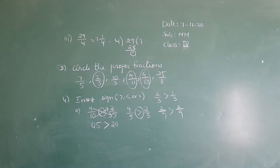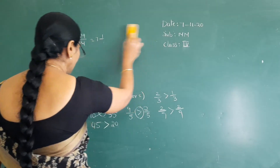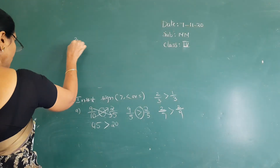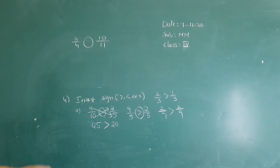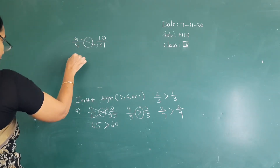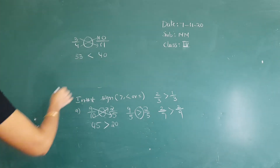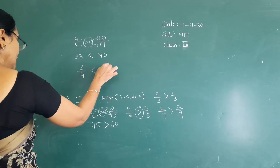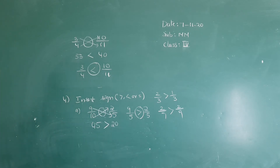In cases other than same denominators or same numerators, we find the cross products — whichever cross product is greater, that fraction is greater. Next: 3 by 4 and 10 by 11. Cross products: 11 threes are 33, 10 fours are 40. Since 40 is greater, 3 by 4 is less than 10 by 11.